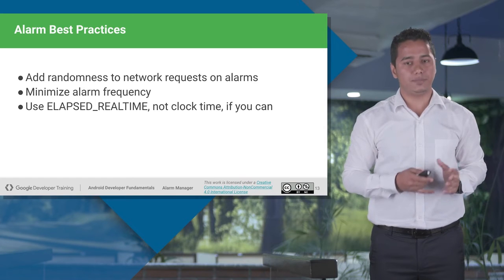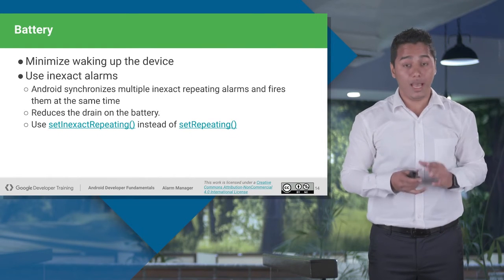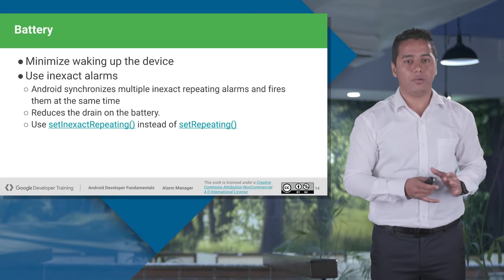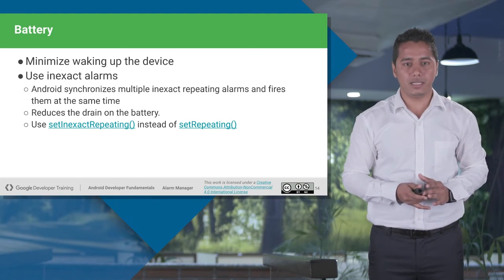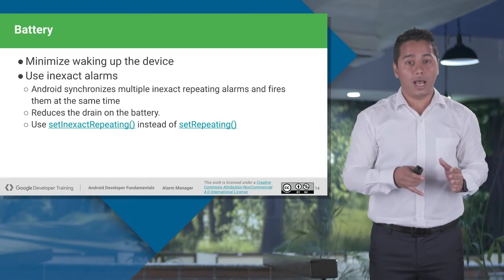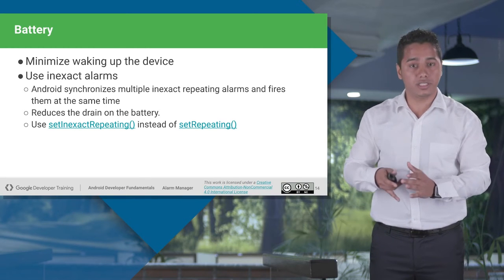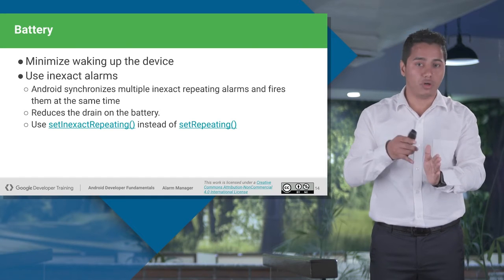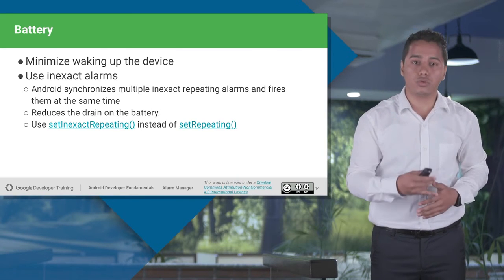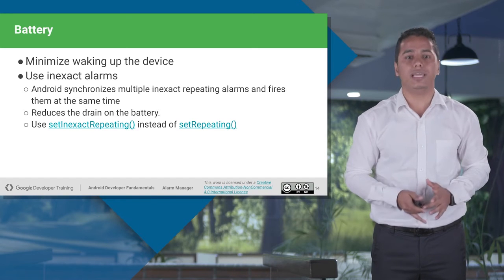Try to use elapsed real time, not the specific clock time, if you can. Battery plays an important role — you have to minimize waking up the device. Try to use inexact alarms whenever you can. What exactly is an inexact alarm? Let's say you set an alarm after 60 minutes. Your alarm will trigger after 60 minutes, but it may not be right at 60 minutes — it may trigger at 61, 62, or 64, but it will never trigger before 60 minutes. That's what an inexact alarm is. If you use an exact alarm, it triggers at exactly 60 minutes but uses more resources, and the Android system has to keep track of it constantly. So whenever you can, try to use inexact alarms.